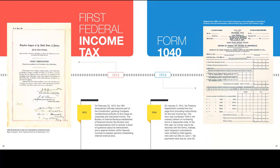The first federal income tax: let's take a look at the first forms. February 25, 1913, the 16th Amendment officially became part of the Constitution, granting Congress constitutional authority to levy taxes on corporate and individual income. The Bureau of Internal Revenue established a personal income tax division and correspondence unit to answer a flood of questions about enforcement, and a special division within general counsel to prepare opinions interpreting internal revenue laws. The first 1040 form appeared in 1914.